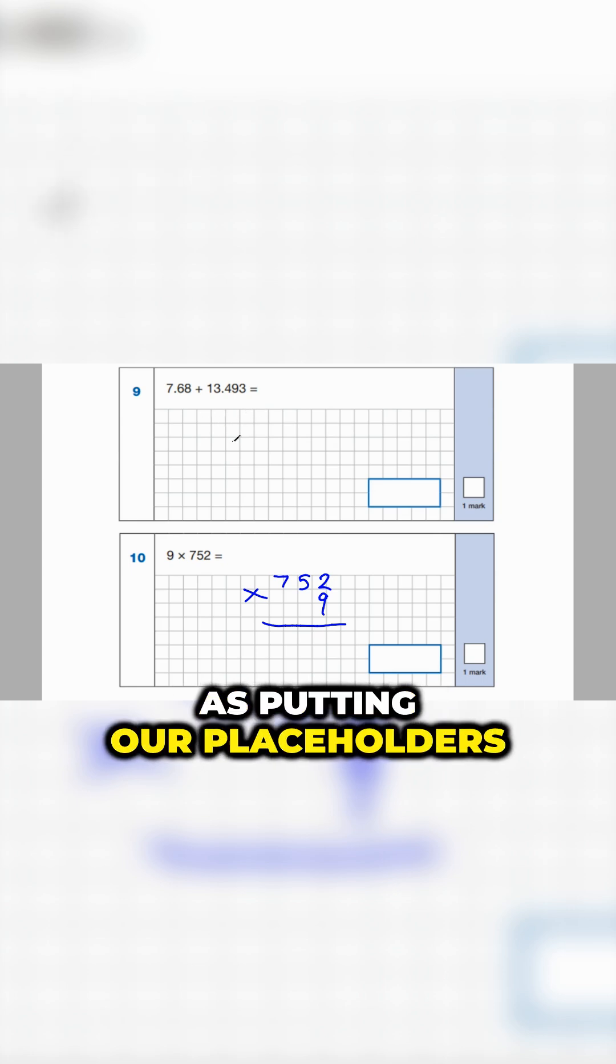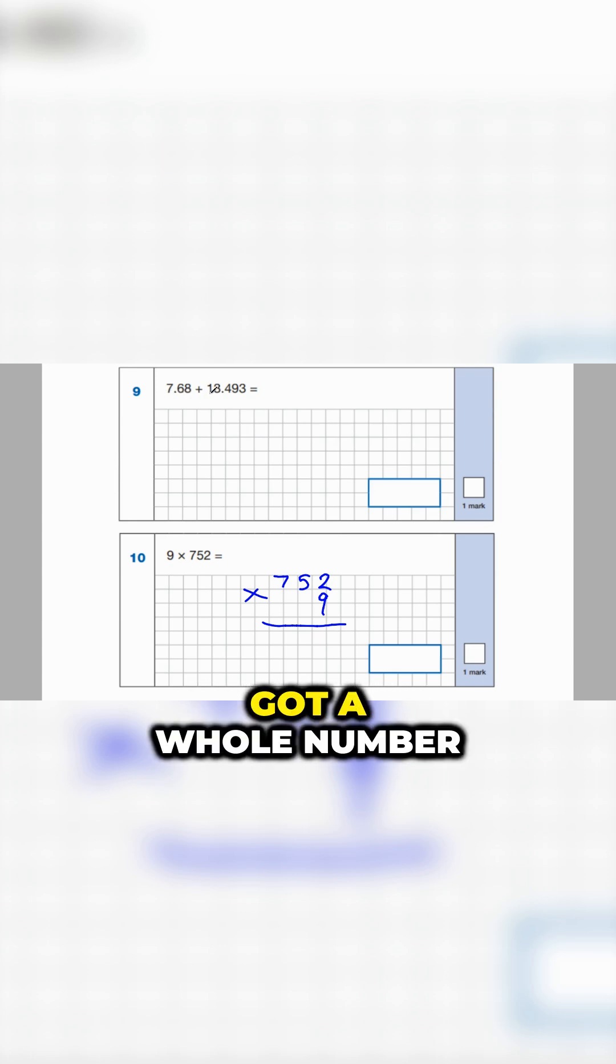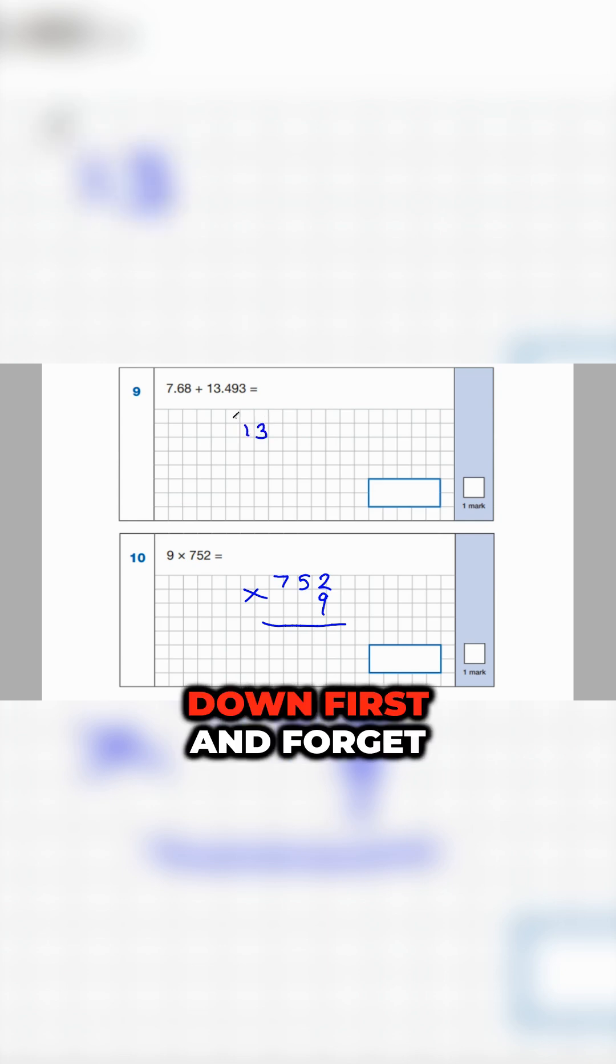As well as putting our placeholders in, let me show you what I mean. So we can see that we've got a whole number here and a whole number here. We've got 13, so let's write that down first and forget the rest of the number. Let's get the other bit underneath.